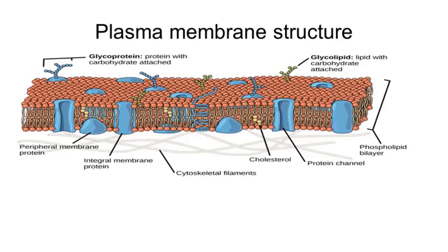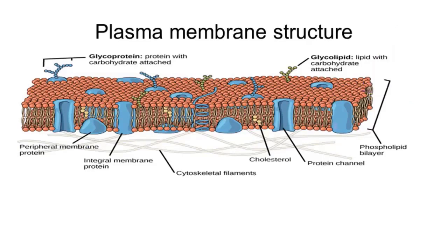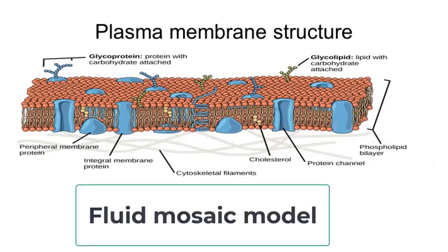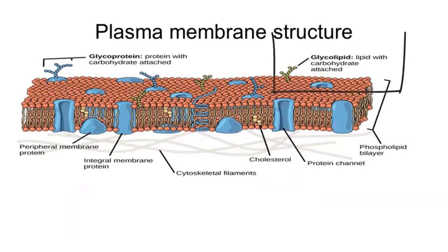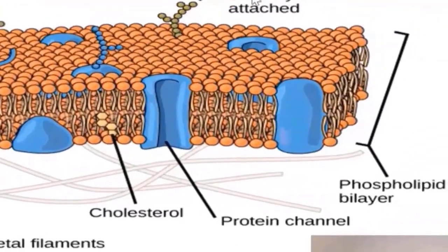As you learned in Chapter 4, the main component of the plasma membrane is the phospholipid. The phospholipid has a polar head and hydrophobic tails. The plasma membrane is made of a bilayer, and the accepted model for the plasma membrane is called the fluid mosaic model. That means there are components such as cholesterol, glycolipids, glycoproteins, and transmembrane proteins embedded in the fluid bilayer of the phospholipid.